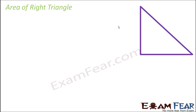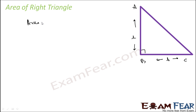As discussed, let us see the area of some popular figures. The area of a right triangle is something we already know. If this is the right triangle, let us name it ABC. If we know the height and the base of the right triangle, then the area of the right triangle is nothing but 1/2 into base into height.